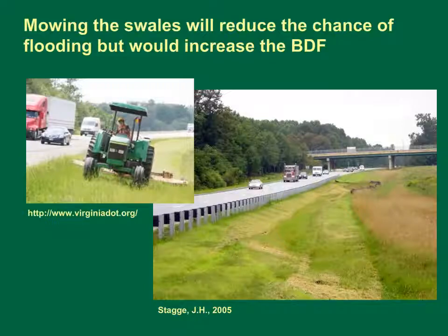Mowing the swales will reduce the chance of flooding on the roadway or in the swale, but it would increase the Basin Development Factor. In the picture on the lower right, the center of the median is still uncut, so water from the median flows through an unimproved channel. However, an interceptor swale next to the road has been mowed and would qualify as an improved channel. We would set the channel improvement score to one if more than 50% of the area flowed to the mowed swales, but this may depend on the frequency of mowing. If vegetation is normally short, we may use a score of one; if normally long, we would assign a score of zero.